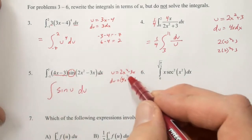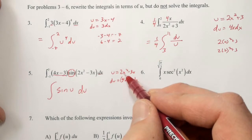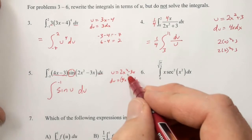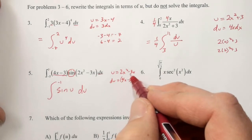When we plug 1 in here, we get 2 minus 3, or negative 1. When we plug negative 1 in here, we get 2 plus 3, or 5.